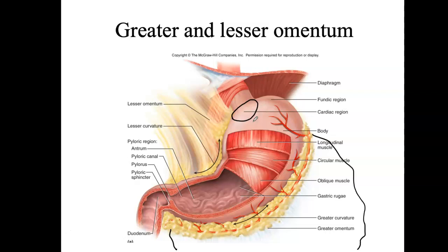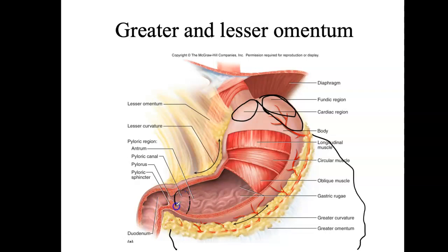Next we move on to the fundus, which would be the region sort of above the area of the entryway from the esophagus — all that area above the cardiac region. Then the major part of the stomach would be the body. And then we come to where the exit is — where the contents of the stomach exit into the small intestine — that exit region is the pyloric region. The pyloric canal leads to the pylorus, where the sphincter is, which regulates when food moves from the stomach into the duodenum.